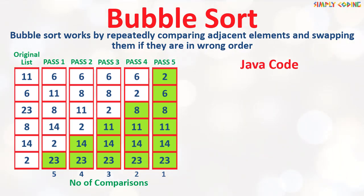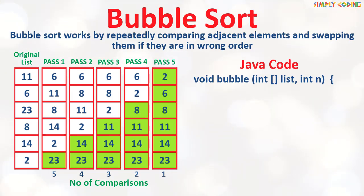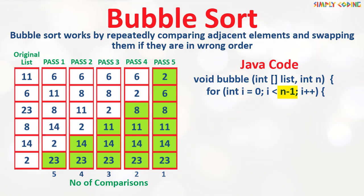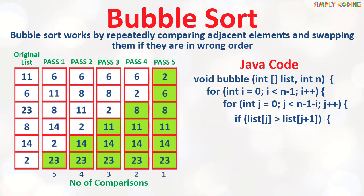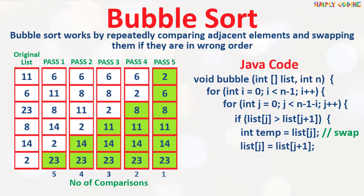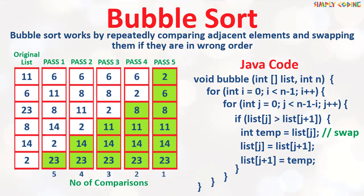Now let's convert the pseudo code to Java code. We are assuming the array is received as a function parameter, but you can write a main method and take it from the user as well. We write the first loop running from 0 to n-1, and the second loop from 0 to n-1-i. Within the loop we have an if statement to compare adjacent elements. If the top element is greater, we use a temp variable to swap the values. This process is repeated for a complete pass and after n-1 passes we have the sorted array.